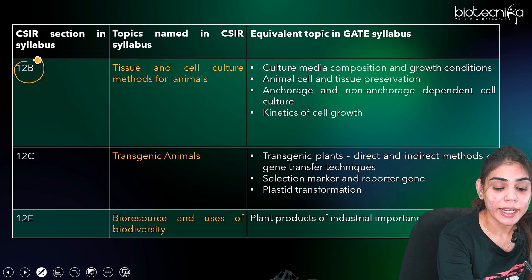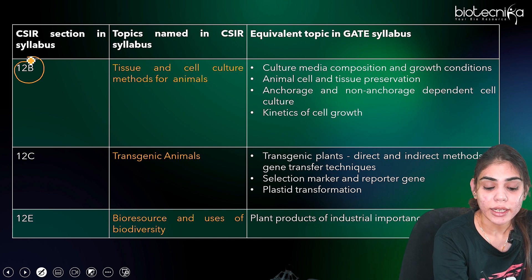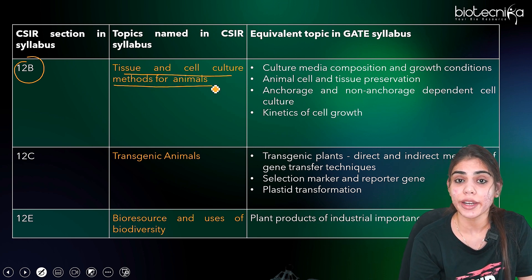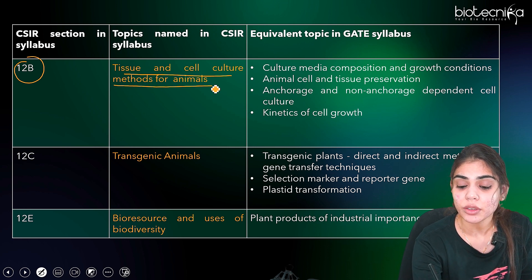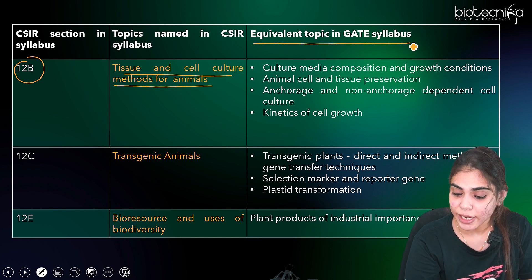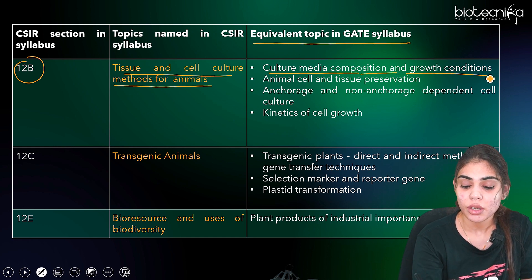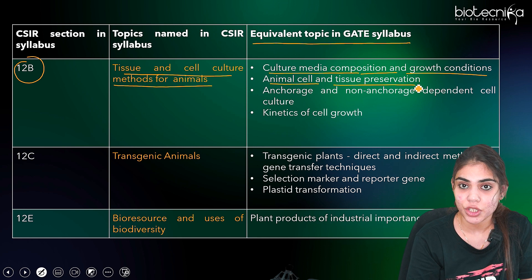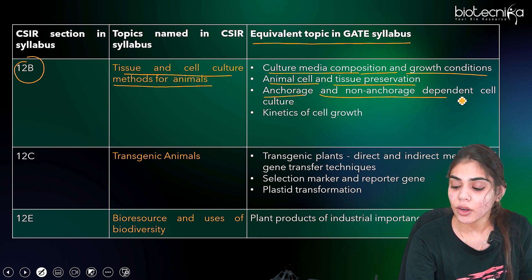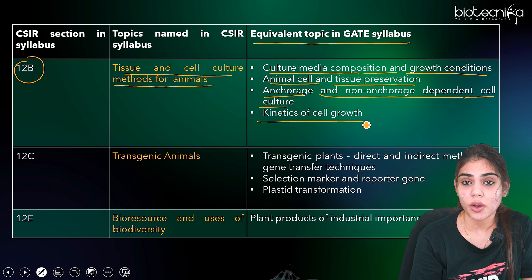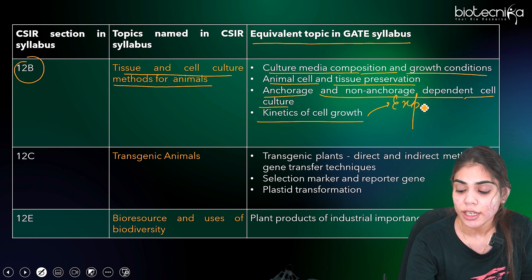The 12B part dealing with tissue and cell culture methods for animals is equivalent to animal biotechnology topics under GATE, including cell culture media composition and growth conditions, animal cell and tissue preservation, anchorage-dependent and non-anchorage-dependent cell culture, as well as the kinetics of cell growth — which is very important — where you have to focus on both exponential as well as logistic growth curves.